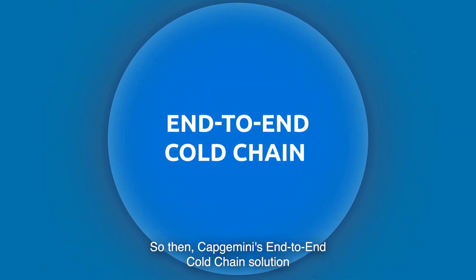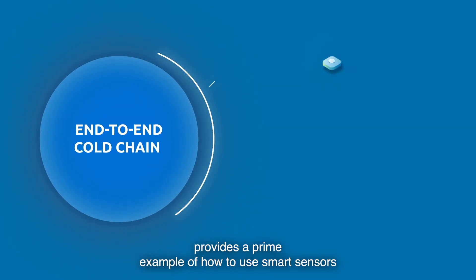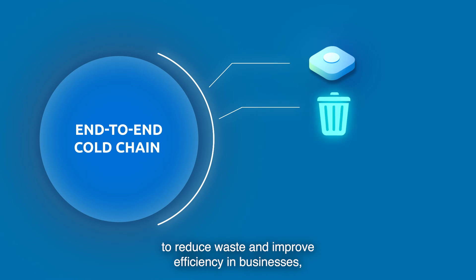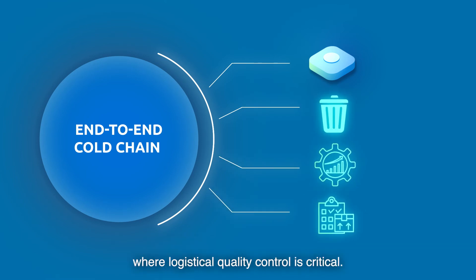So then, Capgemini's end-to-end cold chain solution provides a prime example of how to use smart sensors to reduce waste and improve efficiency in businesses where logistical quality control is critical.